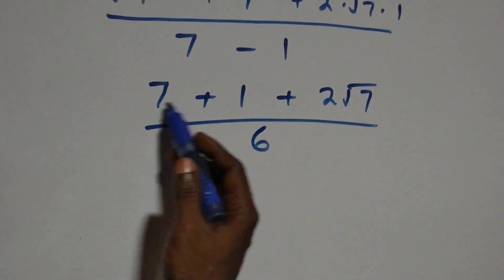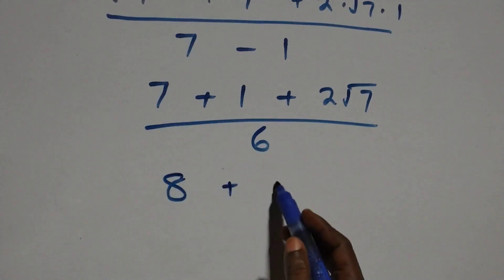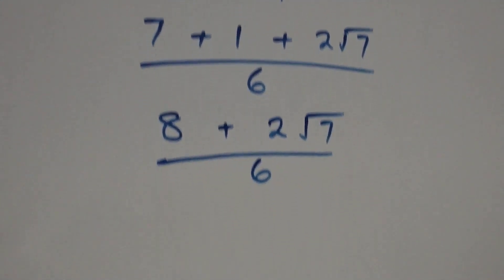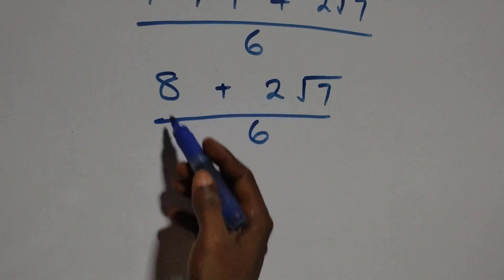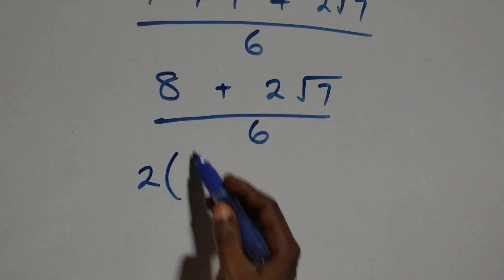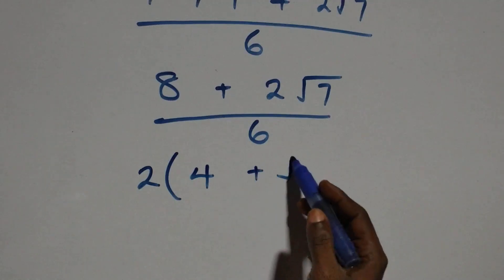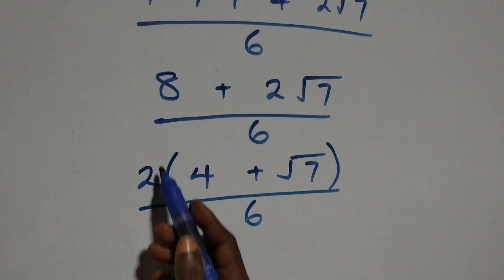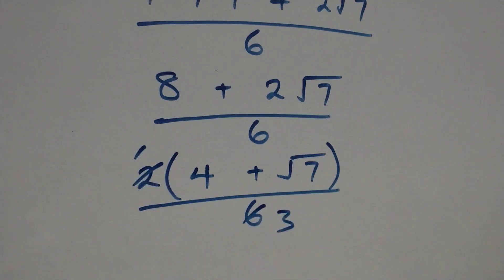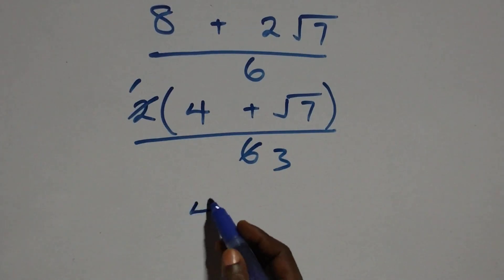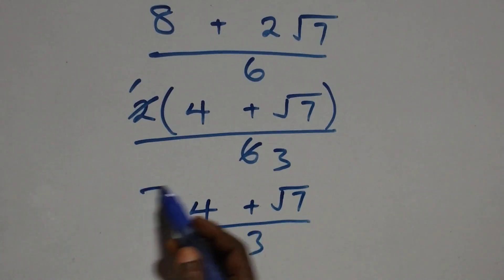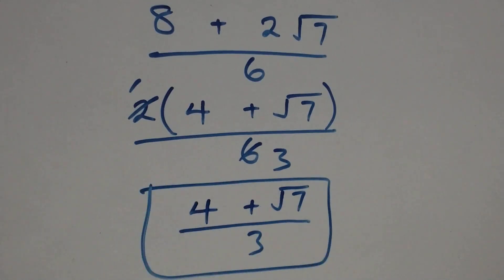Next step: seven plus one gives eight, so we have eight plus two root seven over six. We can factor two from the numerator: two into bracket four plus root seven, over six. Two goes into two once and into six three times, so we get four plus root seven over three. This is the simplified form of the given problem. Now let's use the second method.